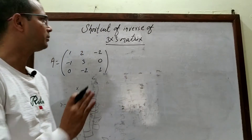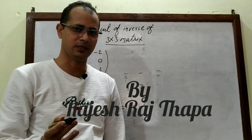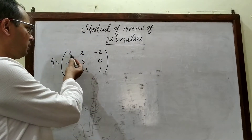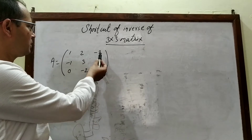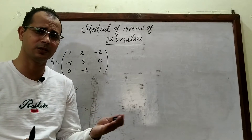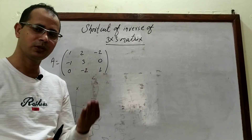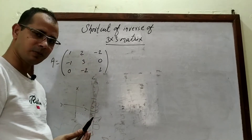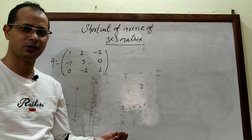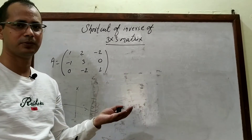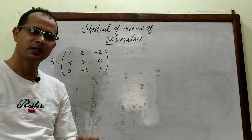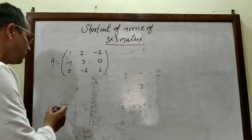Hello everyone. Today in this short video I will be discussing the shortcut for the inverse of a 3×3 matrix. You all know a matrix is a rectangular arrangement of elements, and if it has three rows and three columns it is a 3×3 matrix. By using this shortcut we can easily solve within three to four minutes.